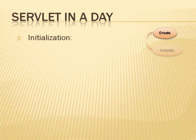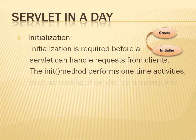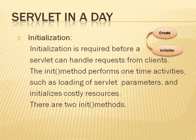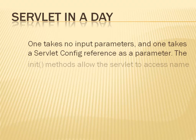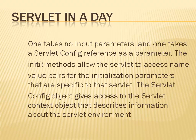2. Initialization — Initialization is required before a servlet can handle requests from clients. The init method performs one-time activities such as loading servlet parameters and initializing costly resources. There are two init methods: one takes no input parameters, and one takes a ServletConfig reference as a parameter. The init methods allow the servlet to access name-value pairs for initialization parameters specific to that servlet, and the ServletConfig object gives access to the servlet context object describing the servlet environment.